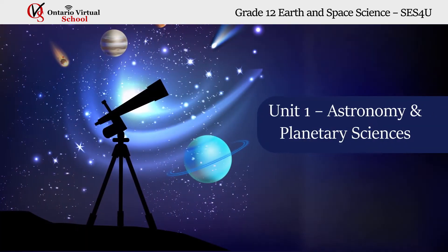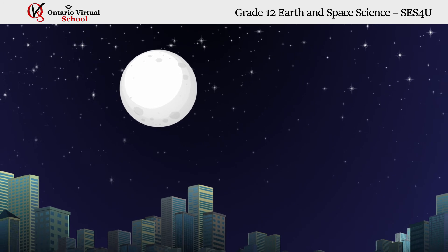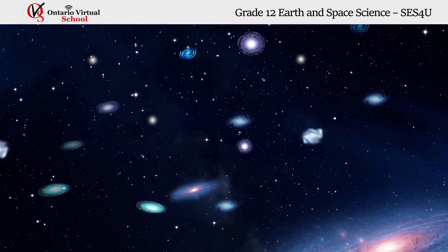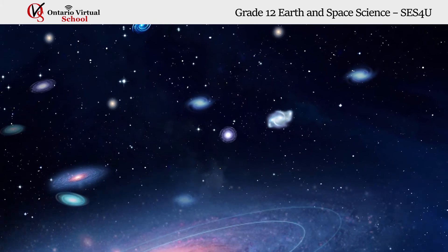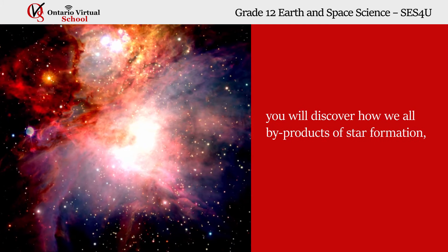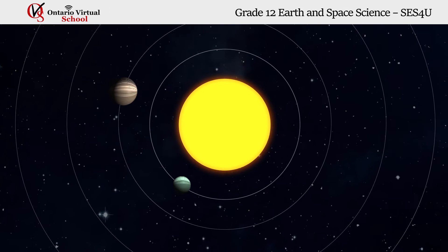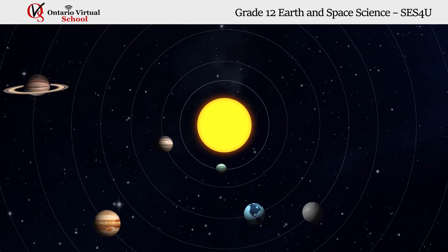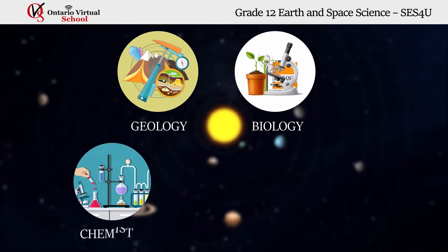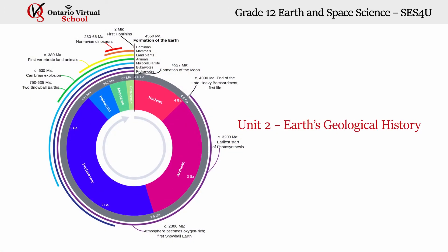Unit 1: Astronomy and Planetary Sciences. Who hasn't felt a sense of awe looking up at the sky on a clear night? By studying the cosmos beyond our own planet, we can better understand where we came from and where we are going. In this unit, you will discover how we're all byproducts of star formation and how astronomy and planetary sciences incorporate the basics of geology, biology, chemistry, nuclear and particle physics.